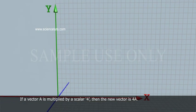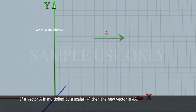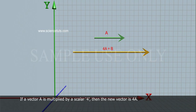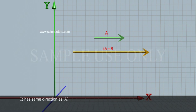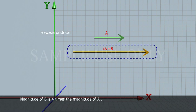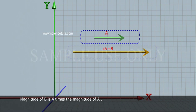If a vector A is multiplied by a scalar 4, then the new vector is 4A. It has same direction as A. Magnitude of B is 4 times the magnitude of A.